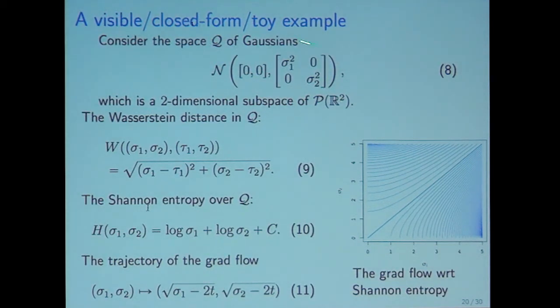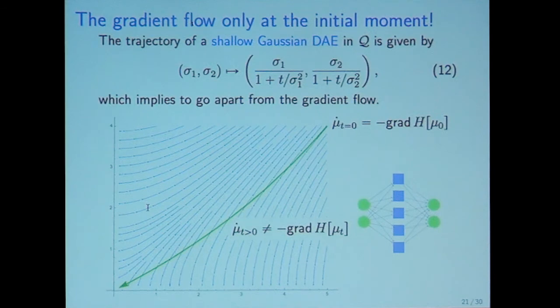This example is very excellent because the Wasserstein distance in Q is given by closed form 9, and the Shannon entropy is closed form 10. The trajectory of the gradient flow with respect to Shannon entropy is given by 11. So we can visualize this function space in two-dimensional Euclidean space. The gradient flow is depicted as this flow.